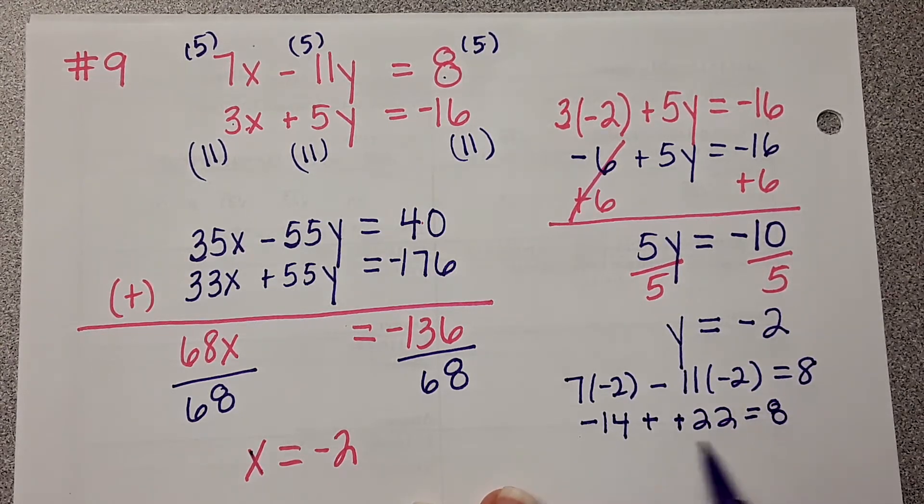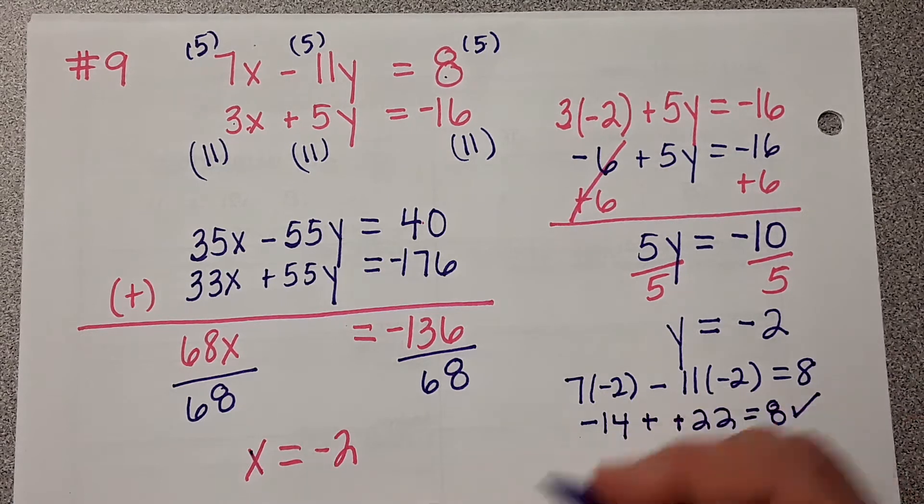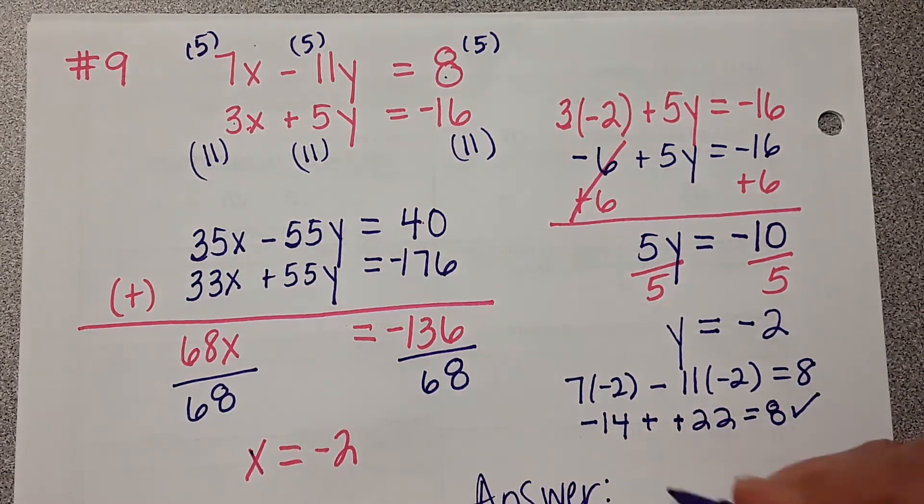Negative 14 plus 22. Does that equal 8? Yes. So our answer is negative 2, negative 2.